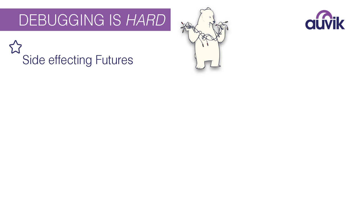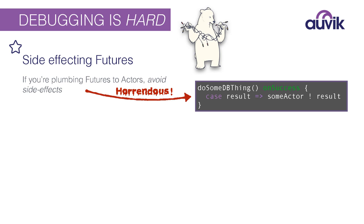One of the main problems was a side-affecting future — a pattern that got ingrained early on. Essentially it looked like: create a future, and when it's done, send the results to an actor using onSuccess. Well, this is probably the worst way you could do it. OnSuccess returns Unit, which is a red flag that you can't compose on top of it. The bigger issue is that futures have wonderful error-handling logic, and you're just throwing it away. If it fails, you don't even know.